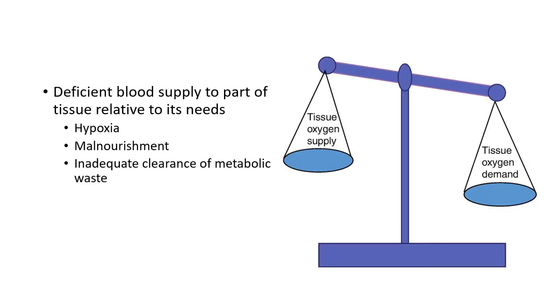So what is ischemia? Ischemia is defined as deficient blood supply to part of a tissue related to its needs. The key point is 'related to its needs' — demand and supply is the matter. When blood supply is not able to cater to the demand of that particular tissue, that is called ischemia.